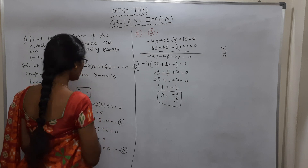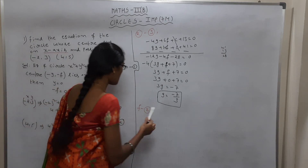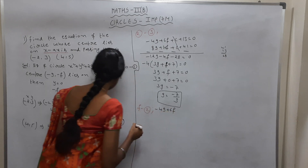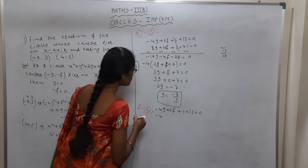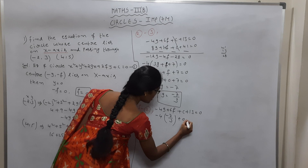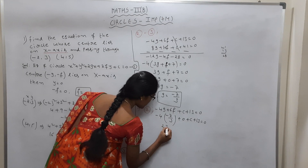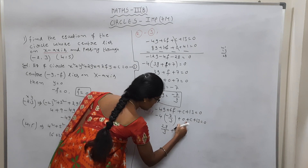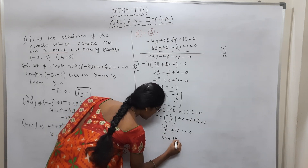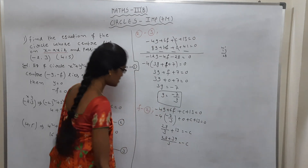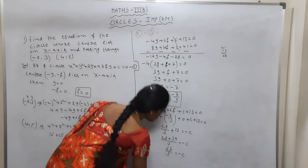Now substitute g = -7/3 and f = 0 into Equation 2: -4(-7/3) + 6(0) + c + 13 = 0. This gives 28/3 + 13 + c = 0. Taking LCM of 3: (28 + 39)/3 + c = 0, so 67/3 = -c, therefore c = -67/3.